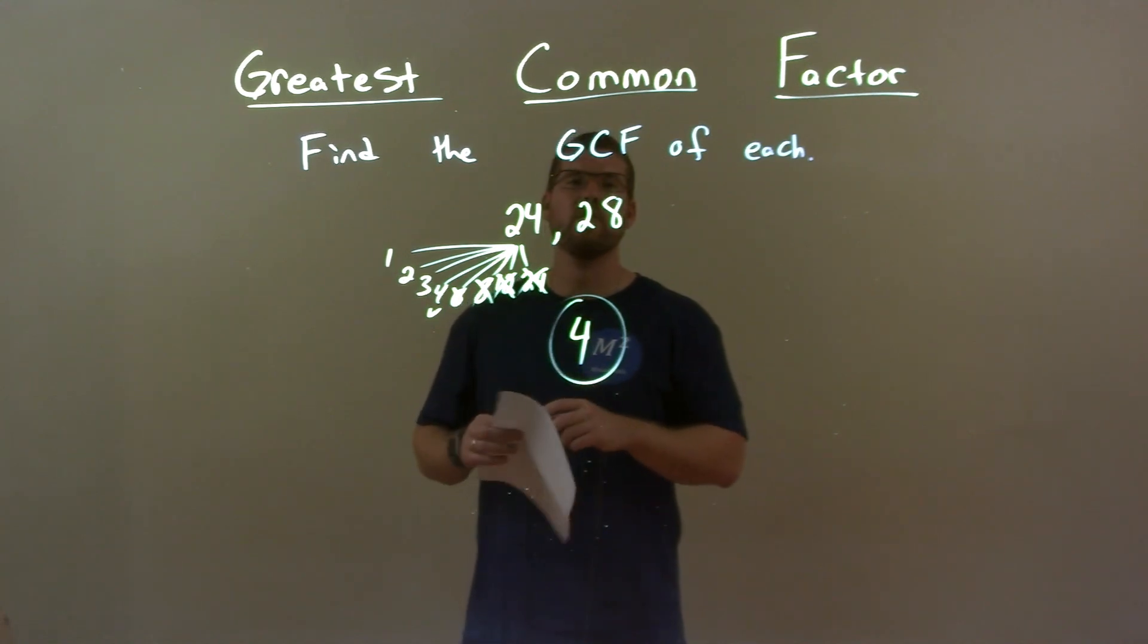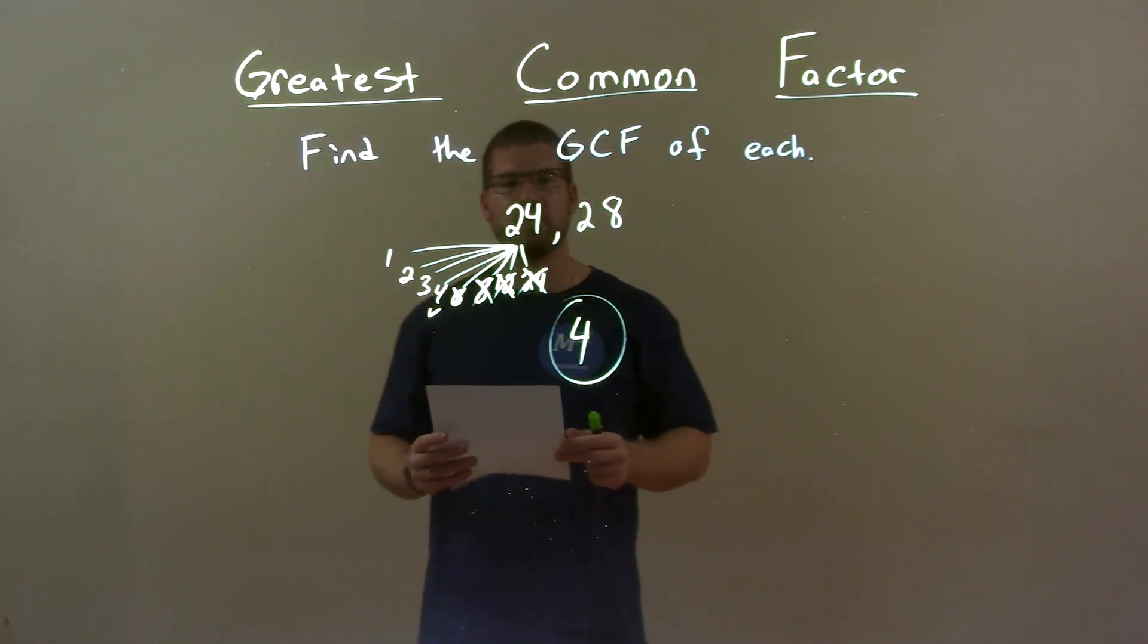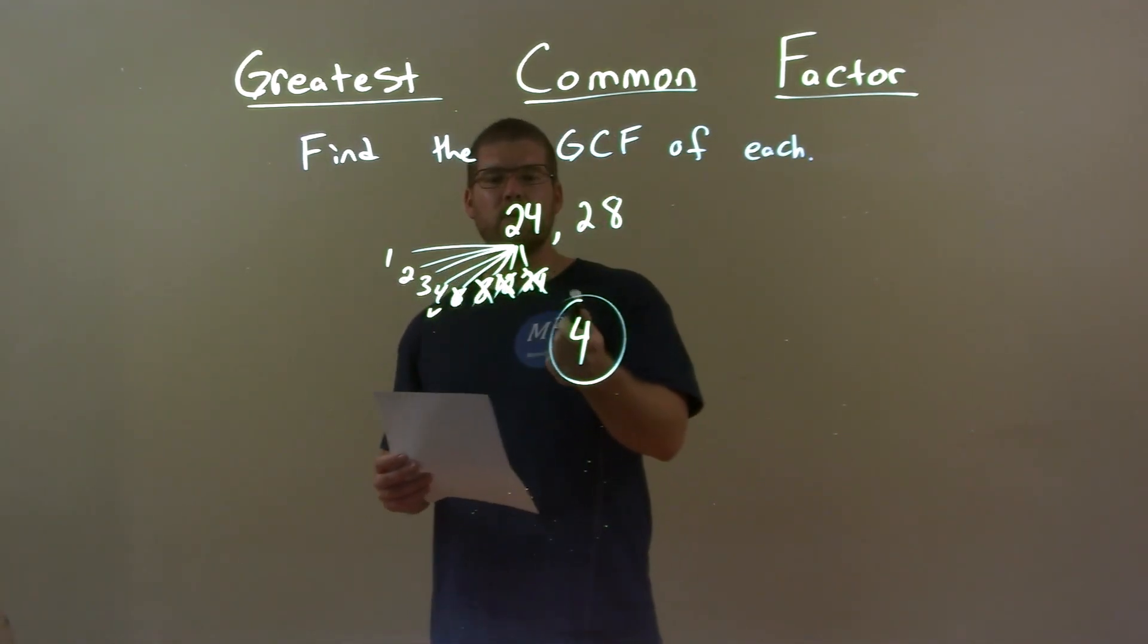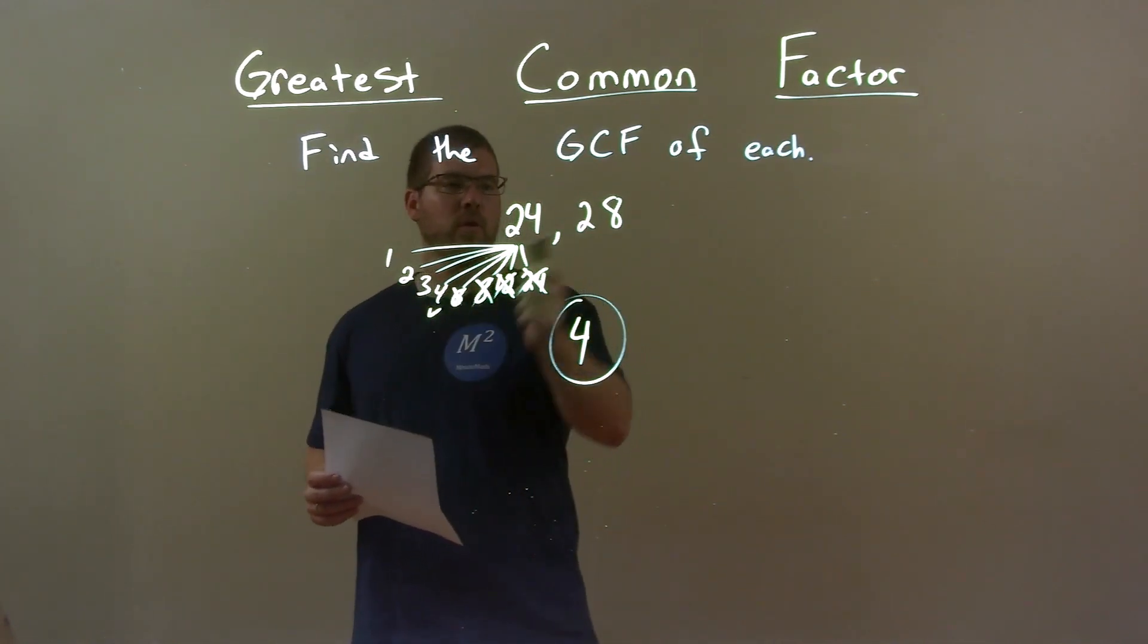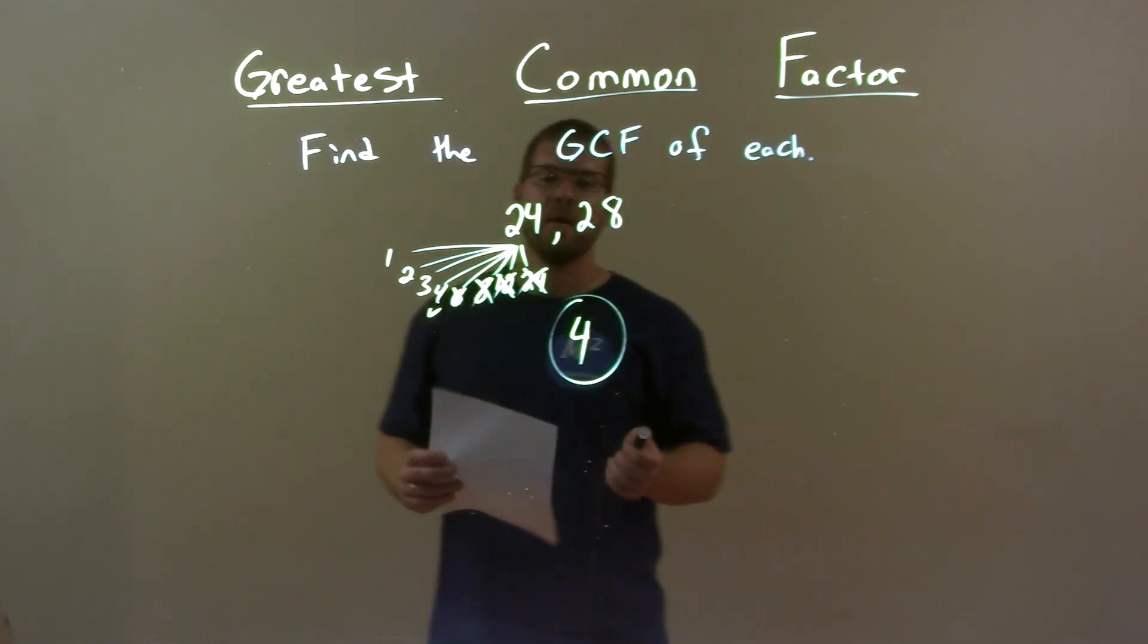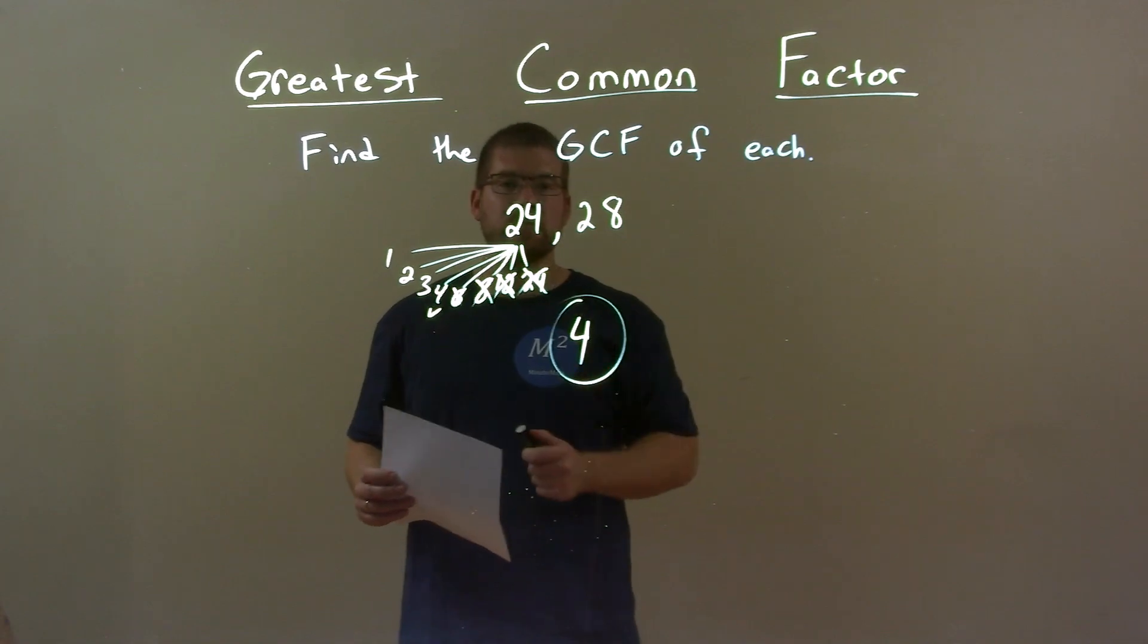So quick recap, we're given 24 and 28, and we have to find the greatest common factor. Well, I broke down the factors of 24, and the largest one of them was 4 that also went into 28. So there we have our final answer, it's 4.